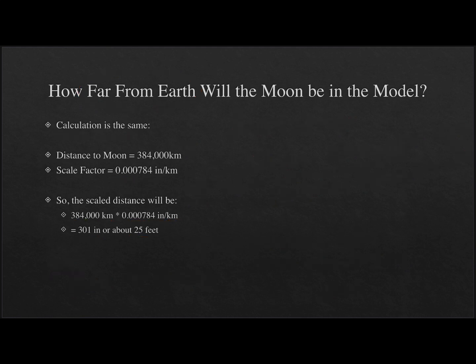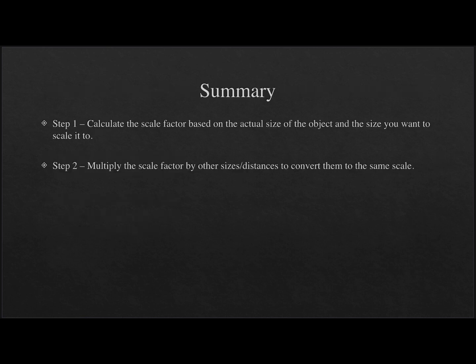So let's finish up here with a quick summary. What we find is just kind of a quick review here. Your first step in any of these is to calculate the scale factor based on the actual size of the object and the size you want to scale it to. All you do is divide these two. So you get the size that you want to scale it to. I give you that in the assignment. You look up the actual size of the object. In your case, it will be the sun. And then all you have to do is multiply that scale factor. Once you've determined it, it does not change. It's the same for the entire assignment by any other sizes or distances that you want to use.